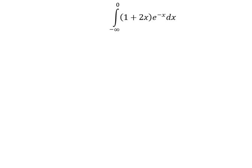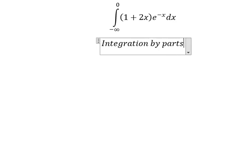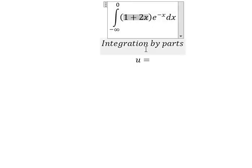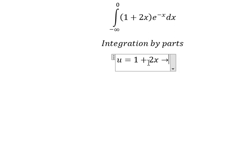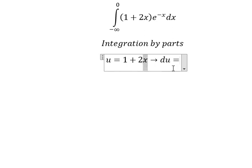Hey guys, welcome back to my channel. Today I want to show you how to answer this using integration by parts. I will put u equal to this one. We need to do the first derivative for both sides — this one is a constant so you get zero, and this one we have number one.